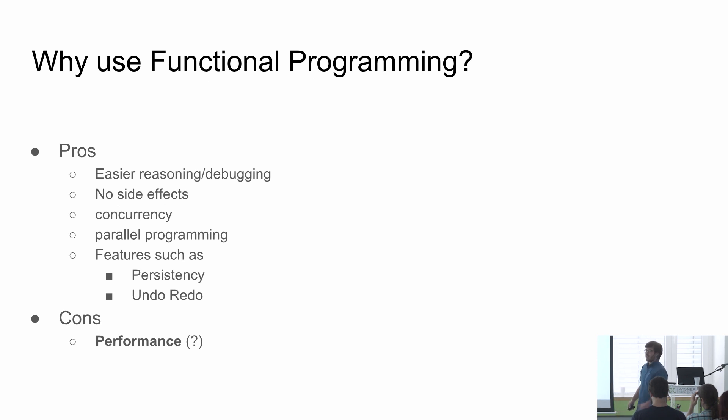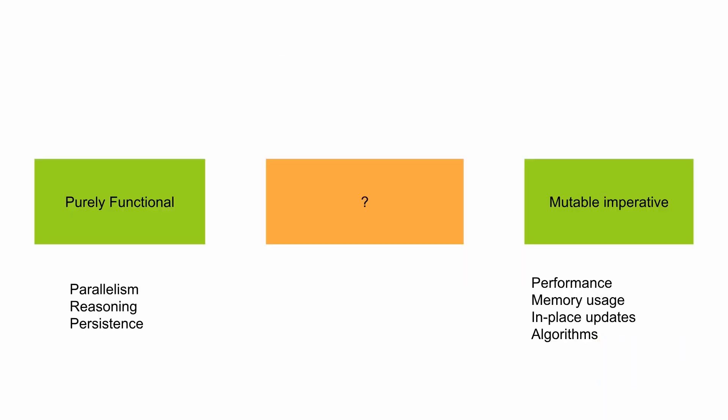In the functional setting we don't have those problems we have in our rendering engine. This is the functional world, this is the imperative world — we like the imperative world because of performance, and here's the functional way. What's in between? Haskellers would say that's a bad idea, but we'll come back to that later.